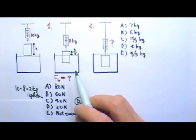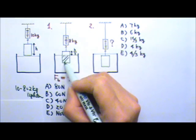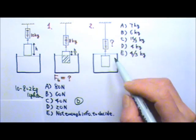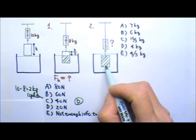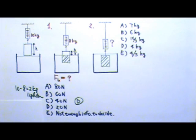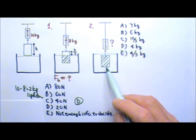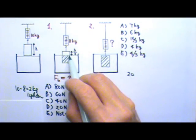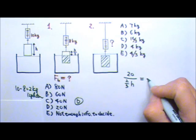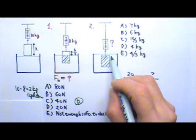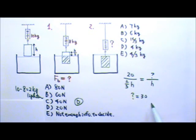The buoyant force is the weight of the displaced fluid. When the entire block displaces fluid, the buoyant force will be more than in the previous case. In Question 1, the buoyant force is 20 N for 2/3 of the height beneath the surface. How many N of buoyant force will we get for the full height h below the surface? Cross-multiplying gives us 30 N.